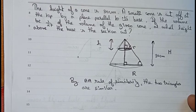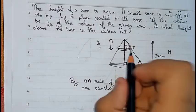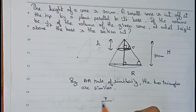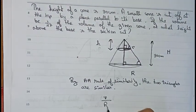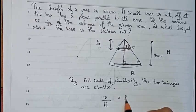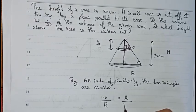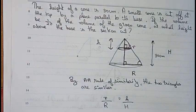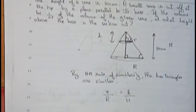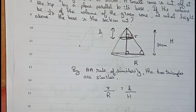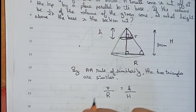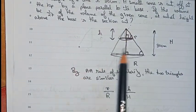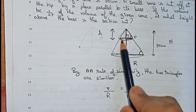Since they are similar, we can write that small r by capital R equals small h by capital H. Now in the question it is given that this small cone has a volume equal to 1/27 times the volume of the bigger cone.